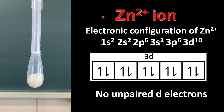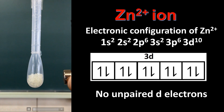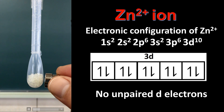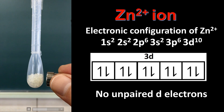We'll start by looking at the zinc 2+ ion. Here we have the electronic configuration of the Zn²⁺ ion and as you can see from the orbital diagram there are no unpaired d electrons. Let's have a look at the effect of an external magnetic field on the sample of zinc nitrate, and as you can see the magnet is having no effect on the sample.